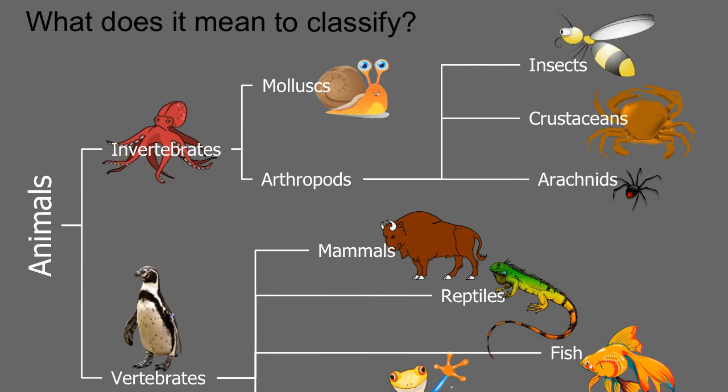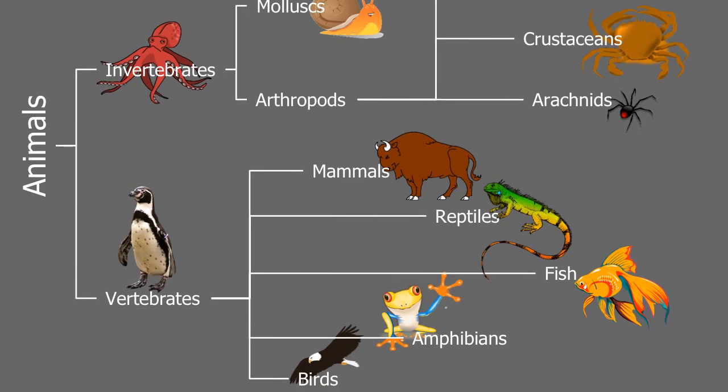An example of this would be we break down animals for the most part into invertebrates or vertebrates. Then we can break down invertebrates even further whether it's breaking them into molluscs or arthropods, and then arthropods we can break into different types of insects, crustaceans, or arachnids. Vertebrates, on the other hand, we can break down into the common groups of either mammals, reptiles, fish, amphibians, and birds. So these are all different types of animals that have similar characteristics that we will classify them together to get a better understanding of how they can all relate.